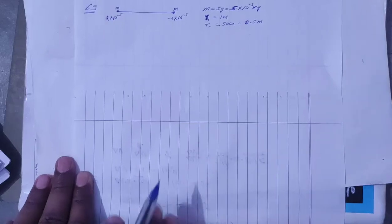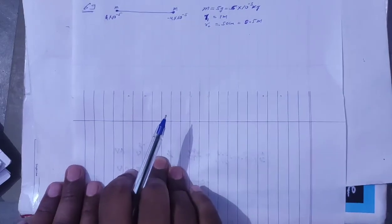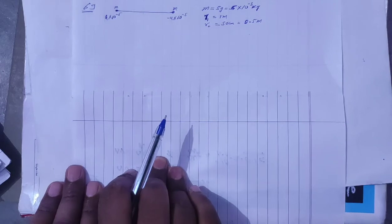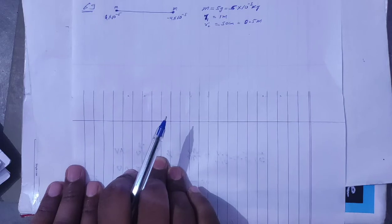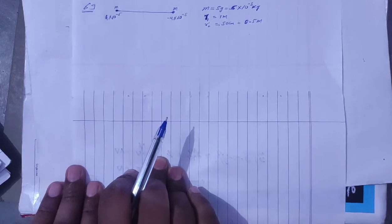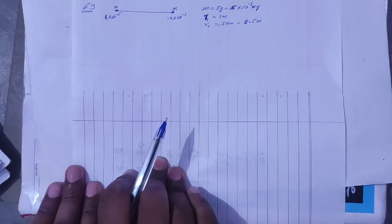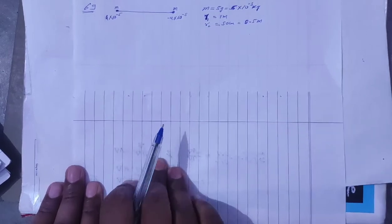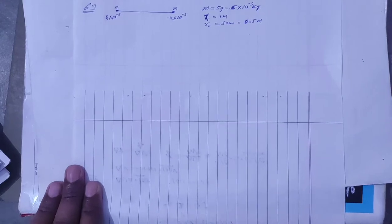SC Bama Solution, Chapter 29: Electric Field and Potential, Question 69. Two particles having equal mass 5 grams each and opposite charges: plus 4×10⁻⁵ coulomb and minus 4×10⁻⁵ coulomb. They are released from rest with a separation of 1 meter between them. Find the speed of the particles when the separation is reduced to 50 cm.